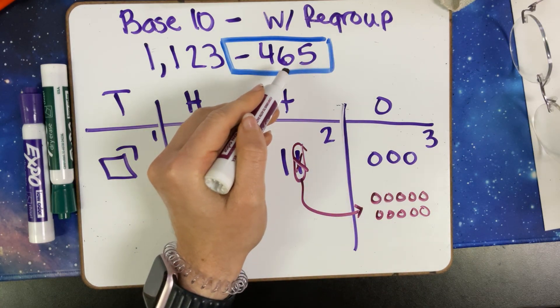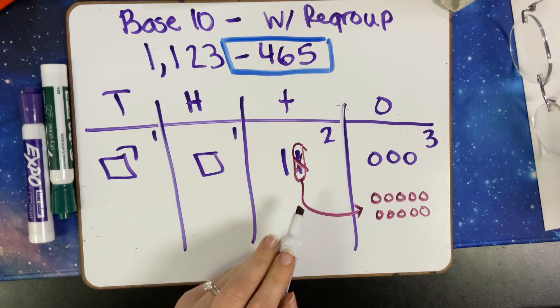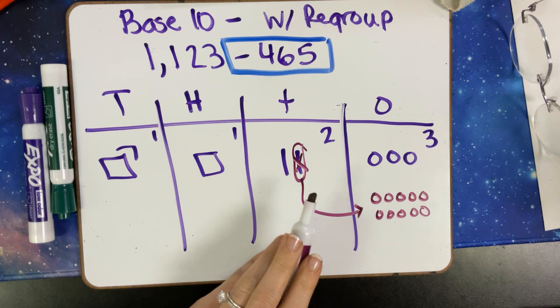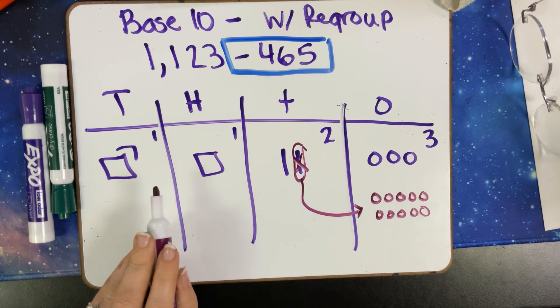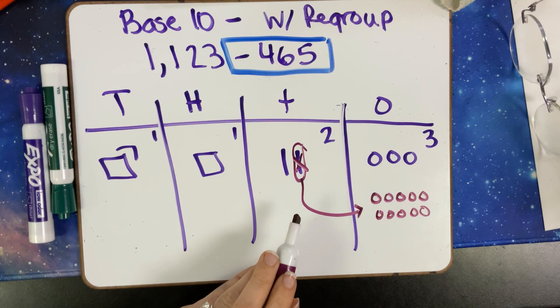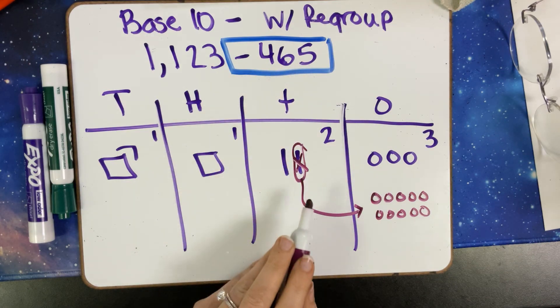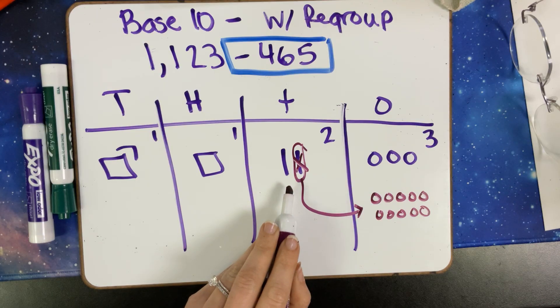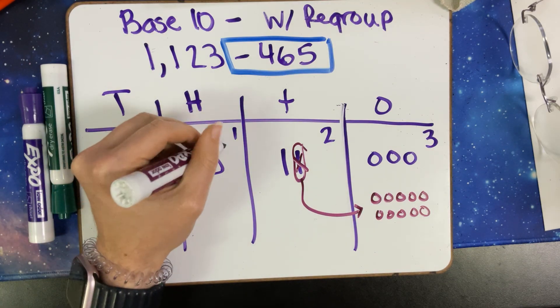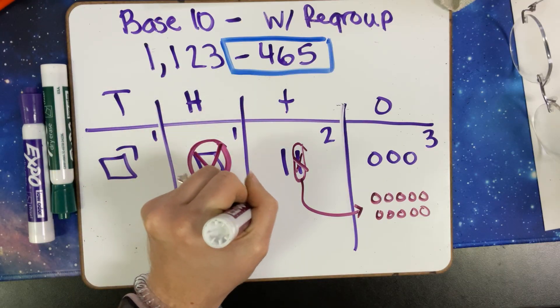I'm going to look at my tens place. I'm going to regroup everything before I even start crossing out. Everything I've regrouped is going to be done in red so they can see where those new values have come from and why I can't subtract in some spots or what has already been used. My next spot is I need to have six tens. I cannot give you six tens if I only have one. So we're going to take this hundred and we're going to break it into its pieces.